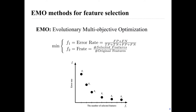Feature selection is also a multi-objective problem. In this work, we plan to design an evolutionary multi-objective-based feature selection algorithm. Minimizing the number of selected features and minimizing the classification error rate are always in conflict. The output of an EMO-based feature selection method is a set of subsets — for example, subset 1 to subset 6.